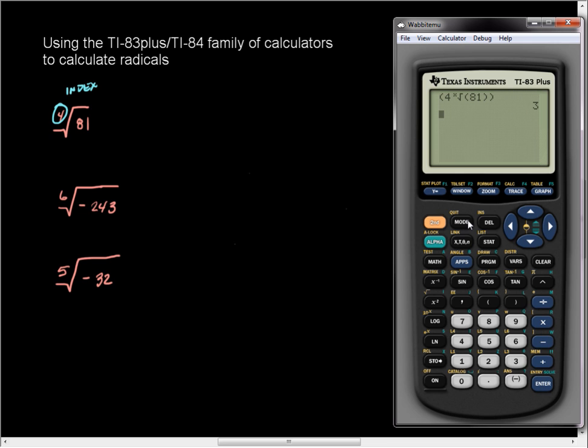If you're just learning about radicals, then you probably don't know about complex numbers. If you already know about complex numbers, just make sure that your mode is selected to A plus B I. It'll work out.